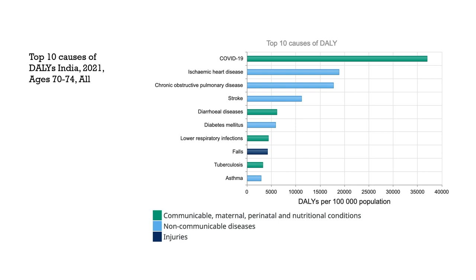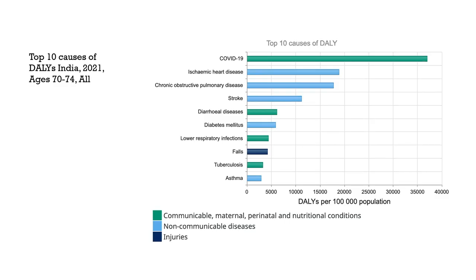To contrast between the very young age population and the old age population — since India's population is also aging — looking at ages 70 to 74, the disease patterns immediately change. There are more blue bars — more non-communicable diseases and injuries leading to morbidity and mortality — heart diseases, pulmonary diseases, strokes. But at the same time, communicable diseases such as diarrheal diseases or lower respiratory infections seem to be impacting the population in countries such as India across age groups, requiring a more comprehensive health intervention at the country level.